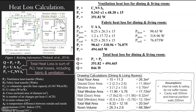First up, we're looking at what heat loss is. Q is your total heat loss, and PV represents heat transfer — V is ventilation heat transfer, and F is for fabric, so that's like your walls, your windows, etc.